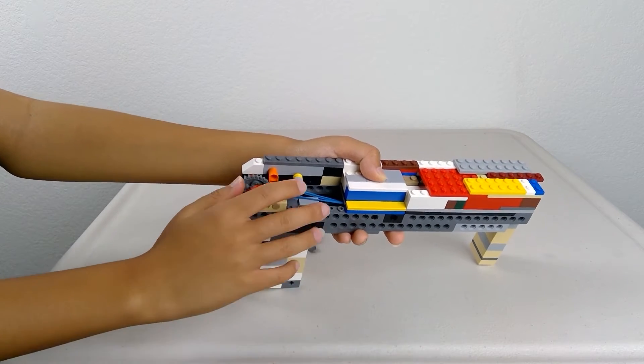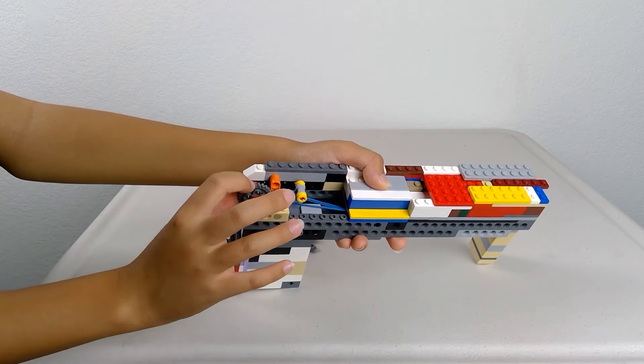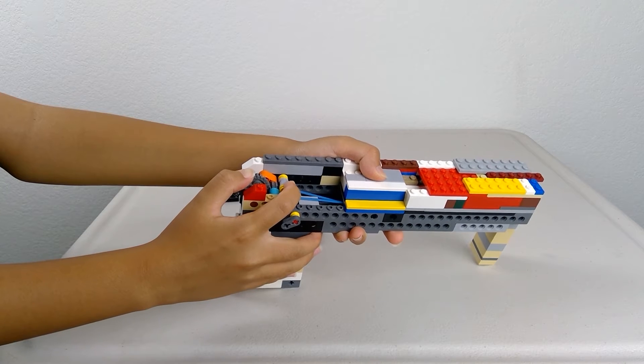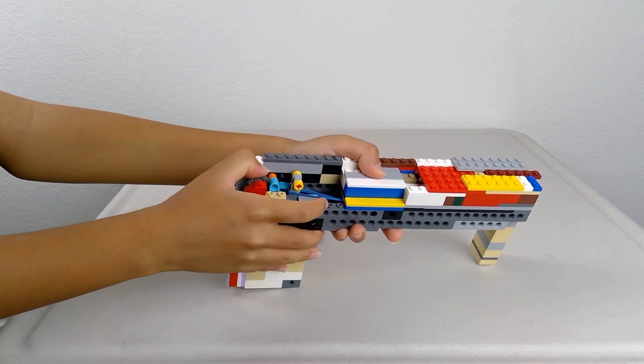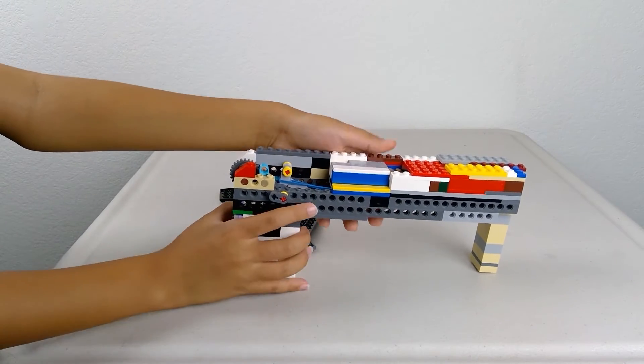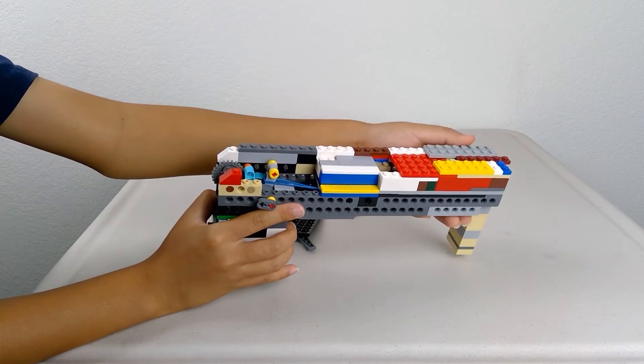The first time the gear is pushed forward is when it shoots out the rubber band. And the second time it moves forward is to load in the new rubber band. Then, with the pump here...